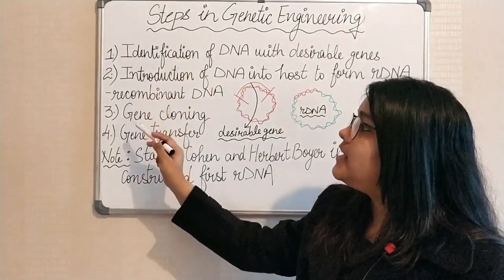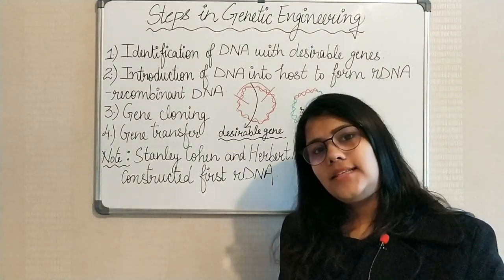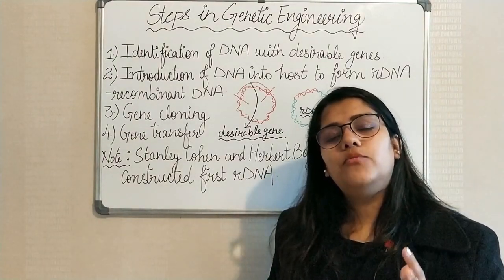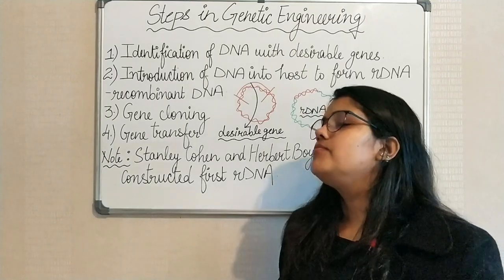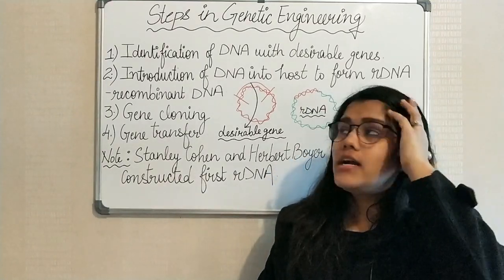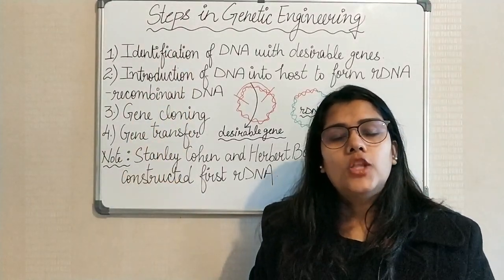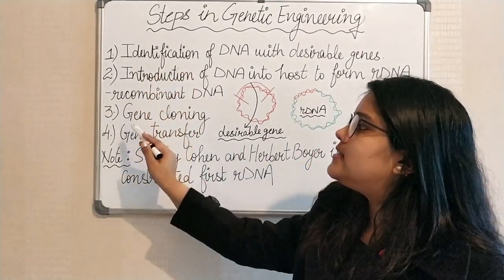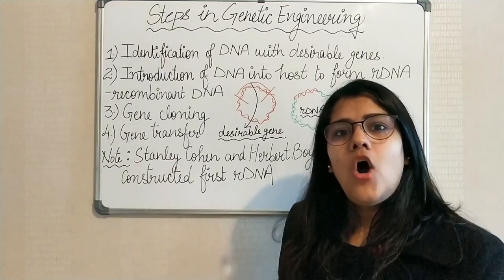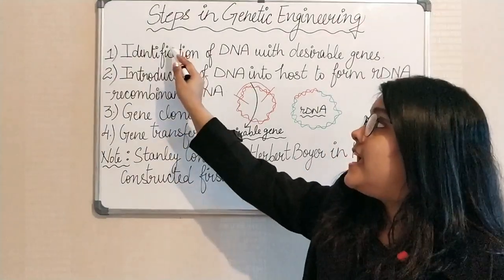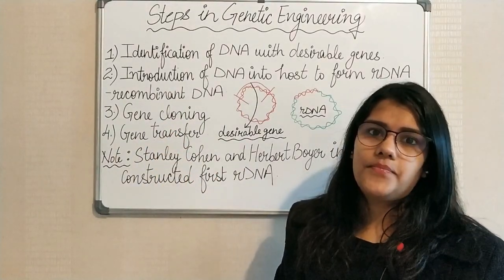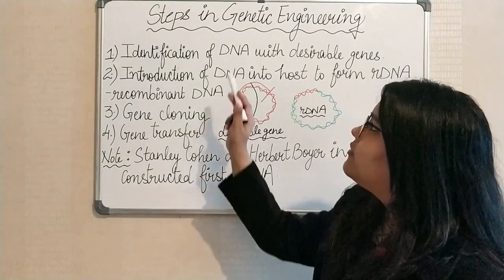Today I am going to tell you the different steps of genetic engineering. If you notice, on my board I have written only four key points — no explanation. Why? Because if a question on this topic comes in the exam, it will either be a two-mark question directly asking what are the four steps of genetic engineering, or a three-mark question where you need to briefly explain these four key points. So first write these four key points, underline them, and then explain in your own words.